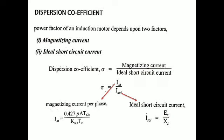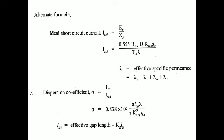The depreciation coefficient is denoted as rho and is defined as the ratio of magnetizing current to ideal short-circuit current: rho = Im / Isc. The magnetizing current per phase is given by Im = 0.427 × p / (kw × s × ts). The ideal short-circuit current is given by I = E / X, where E is the voltage and X is the reactance. This coefficient is regularly asked in two-mark questions.